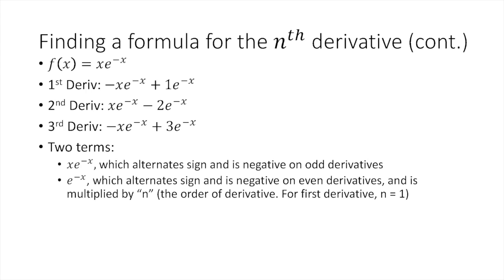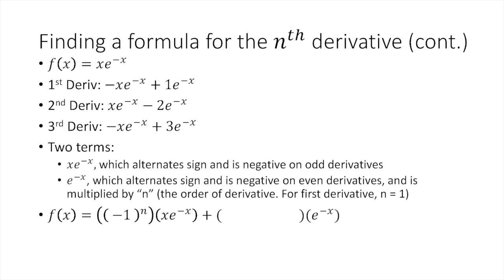Now we have to make the formula. I write f of x equals, then write both pieces added together: x times e to the negative x and e to the negative x. I leave room to multiply those by coefficients that'll help recreate the pattern. I multiply the x times e to the negative x term by negative 1 raised to the n power. This forces the term to be negative on odd-numbered derivatives, which matches the pattern. When negative 1 is raised to an odd power it stays negative 1, but when raised to an even power it's positive. So for the third derivative, negative 1 to the third power is negative 1, giving negative 1 times x times e to the negative x.